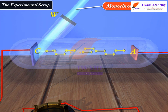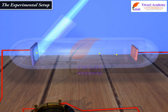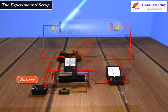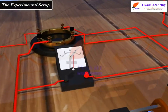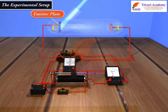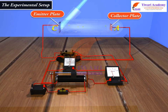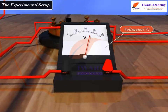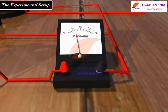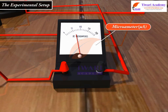The electrons are emitted by the plate C and are collected by the plate A. The battery maintains the potential difference between the plates C and A, which can be varied. The polarity of the plates C and A can be reversed by a commutator. The potential difference between the emitter plate and collector plate is measured by a voltmeter V, and the current flowing in the circuit is measured by a microammeter µA.